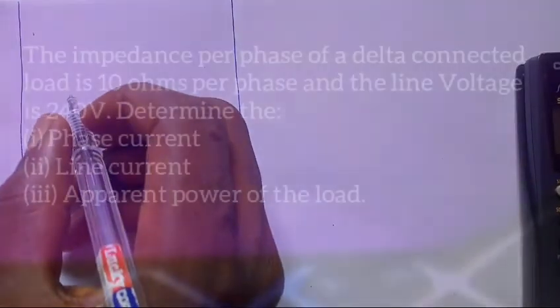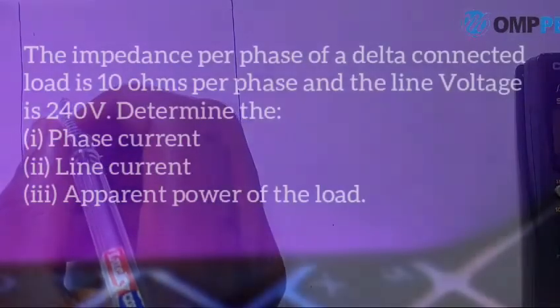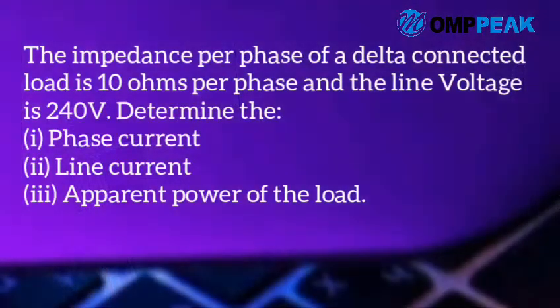In this video we're going to solve the question that says the impedance per phase of a delta connected load is 10 ohms per phase and the line voltage is 240 volts. We need to determine: one, the phase current; two, the line current; three, the apparent power of the load.